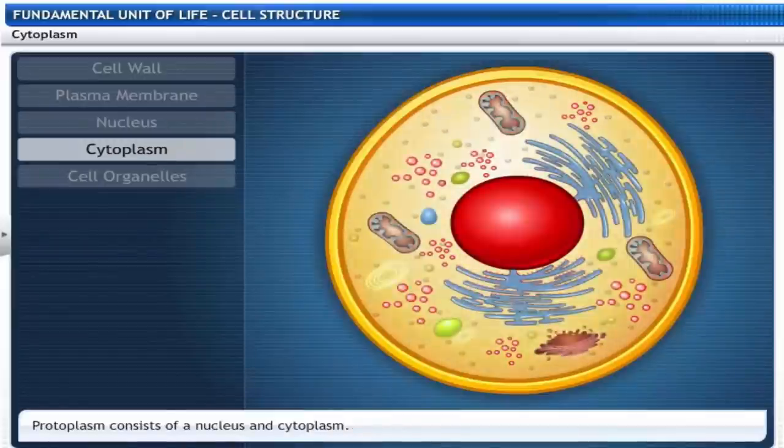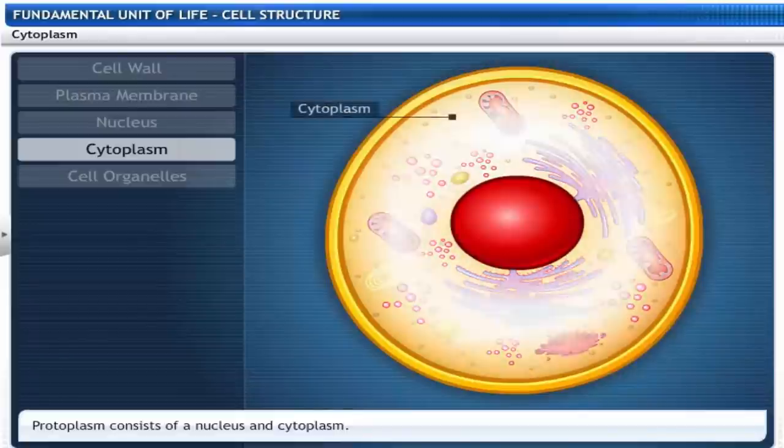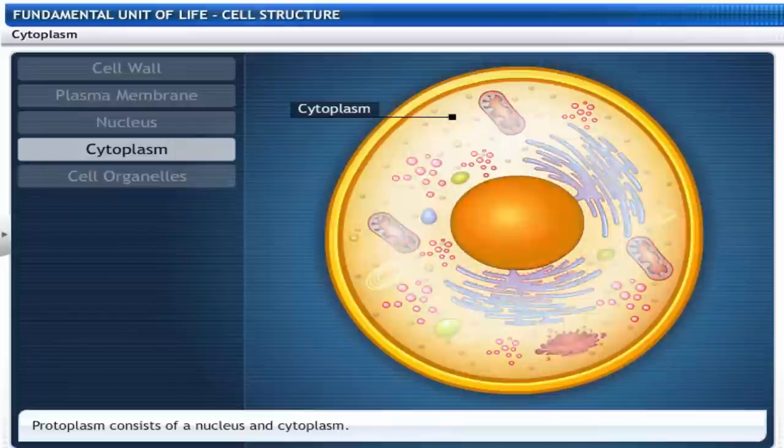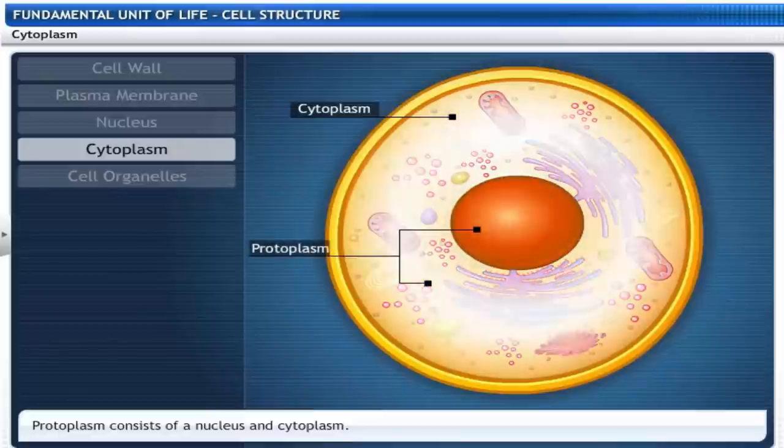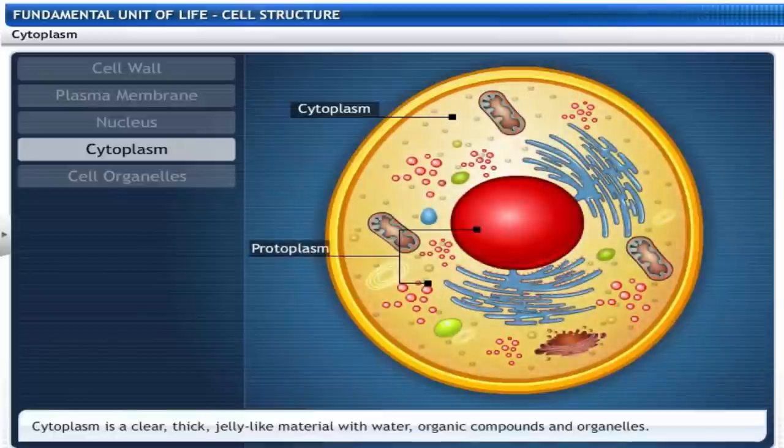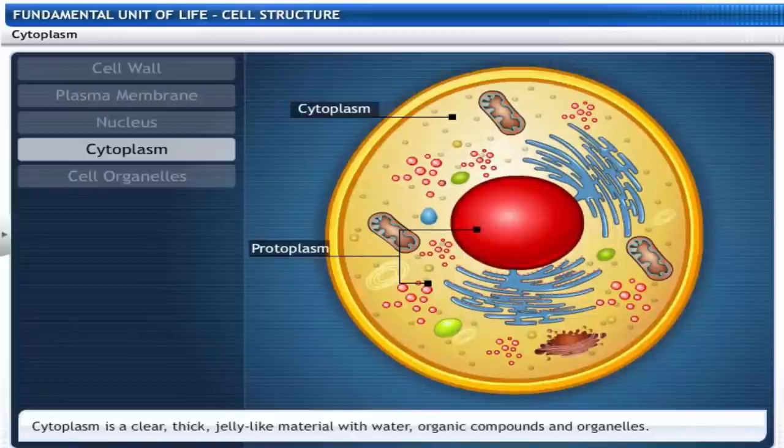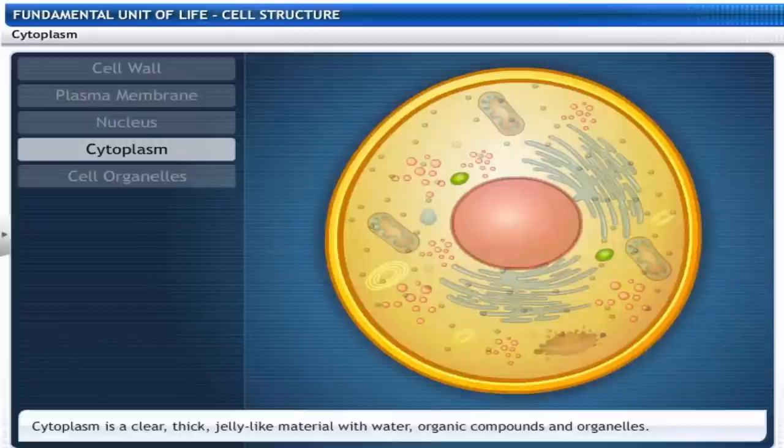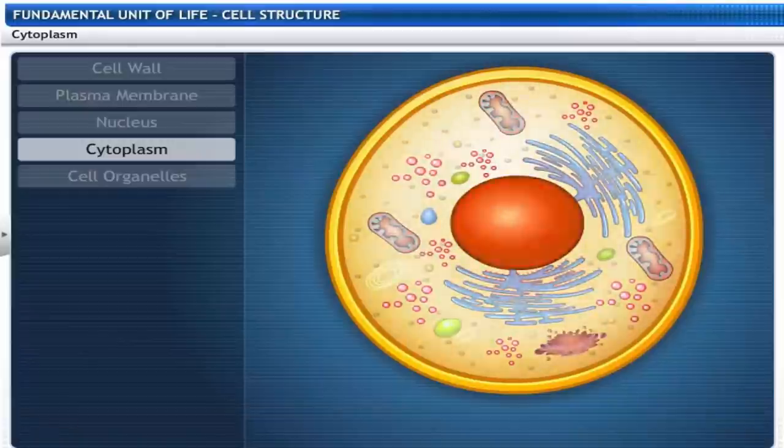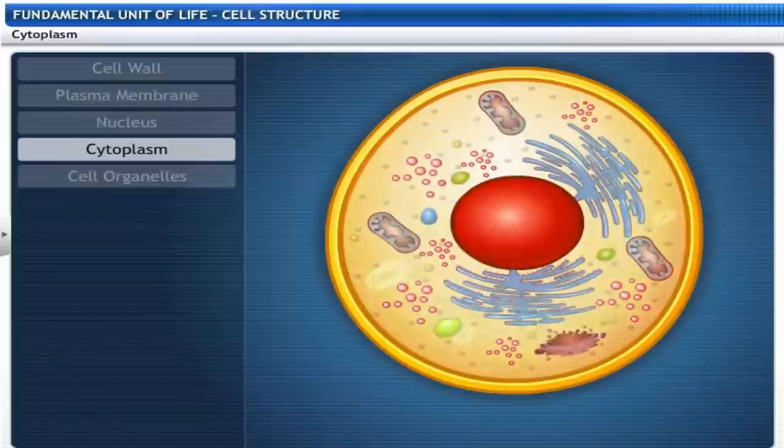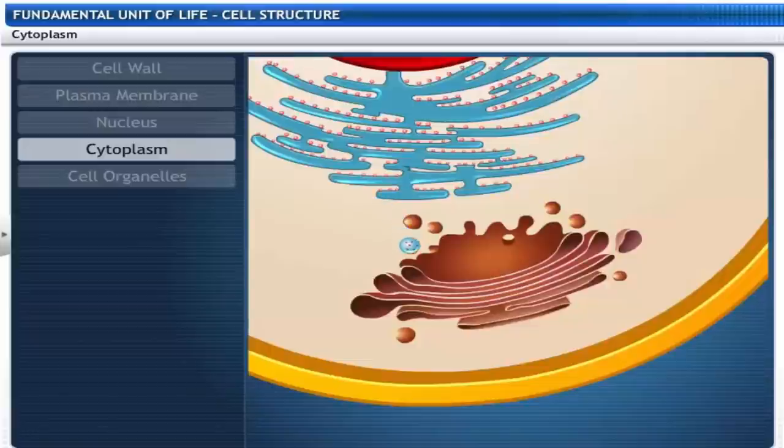The fluid living content between the plasma membrane and the nucleus is called cytoplasm. The nucleus along with the cytoplasm makes up the living content of the cell called protoplasm. Let's take a closer look at cytoplasm. The cytoplasm is a clear, thick, jelly-like material with water, organic compounds and organelles. The liquid part of the cytoplasm other than the organelles is called cytosol. Cytoplasm supports and protects the cell organelles that perform different metabolic functions.